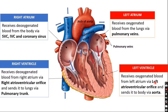The right ventricle pumps blood through the pulmonary trunk to the lungs. This blood going to the lungs is deoxygenated blood.